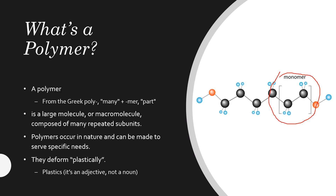From a materials perspective, 'plastic' is an adjective, not a noun. We call polymers plastics because they deform plastically — meaning that when you deform or stretch them, they deform irreversibly. Once you stretch a polymer, most of them do not return to their original position; they deform permanently into the plastic region. So 'plastic' in this context is an adjective, not a noun.